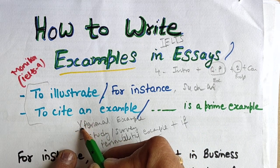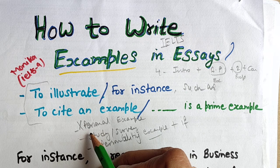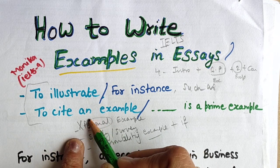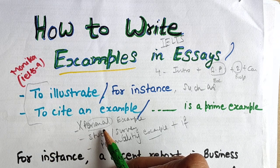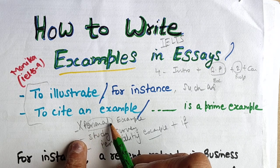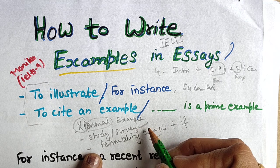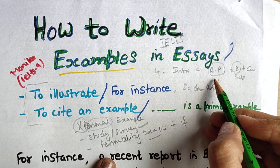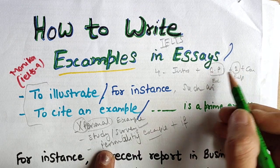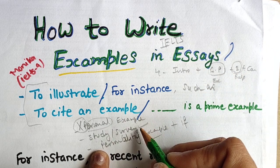Personal examples should be avoided in writing. You can use personal examples once or twice in speaking, but normally you should not use them in writing. If you cannot explain something at a global level, you may use a friend or cousin as a personal example — but only as a last resort. For study or survey examples, if you use one in body paragraph one, try to avoid it in body two and use a more general example instead.